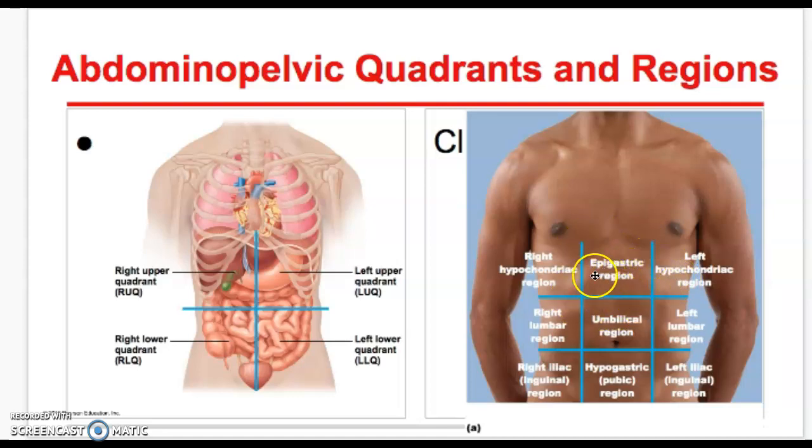And then we have the epigastric region. Epigastric means epi means covering or over and gastric means stomach. So it's above the stomach. And then we have three more regions to go through. Here is the hypogastric region or the pubic region. So hypo means below, gastric means stomach. It's below the stomach. And pubic is just the area where we have genitals.